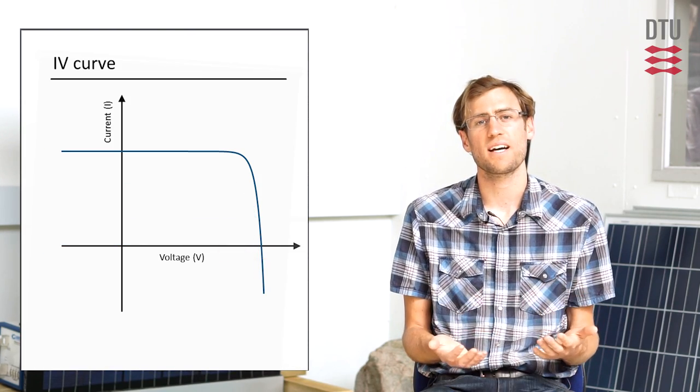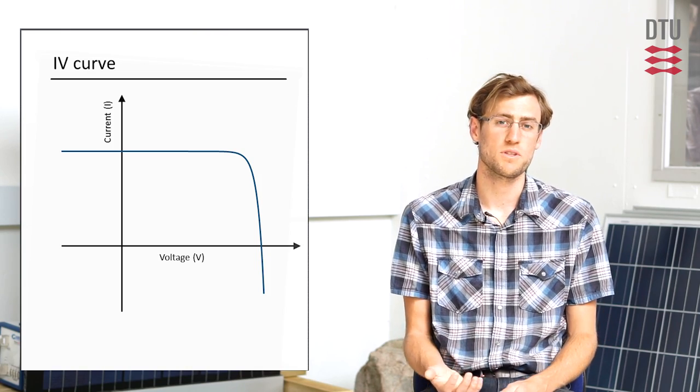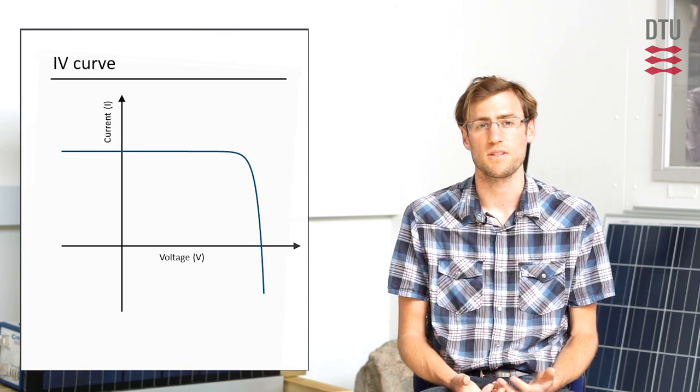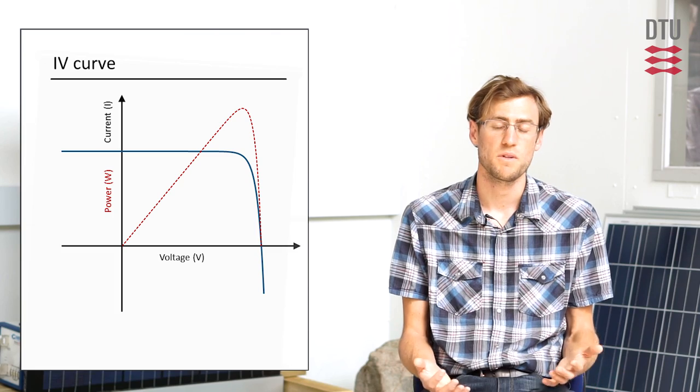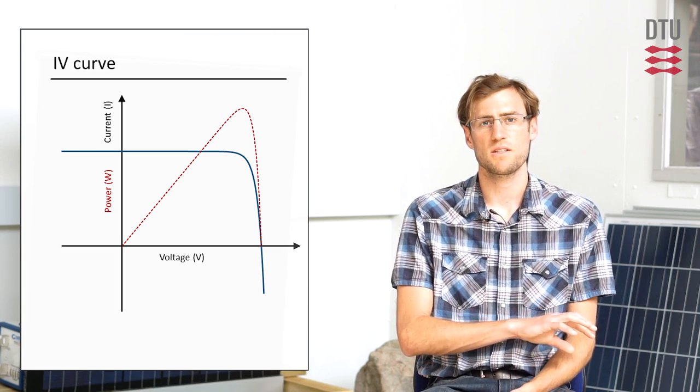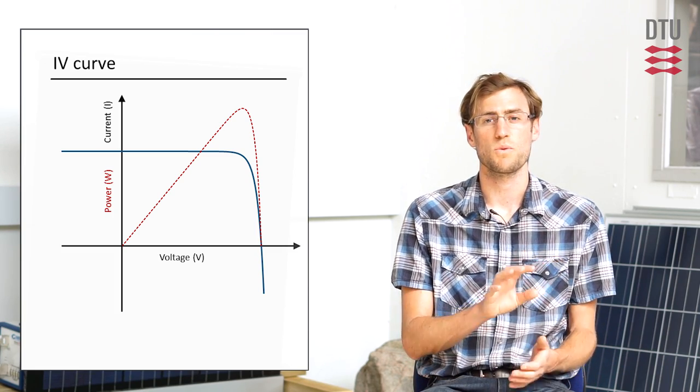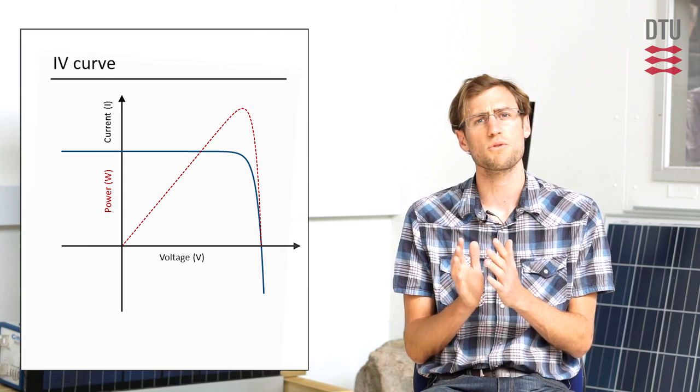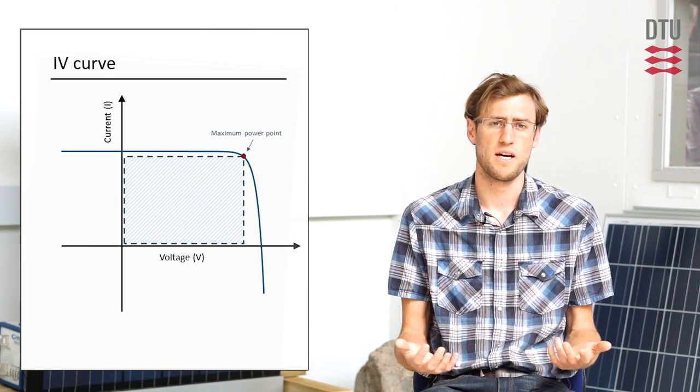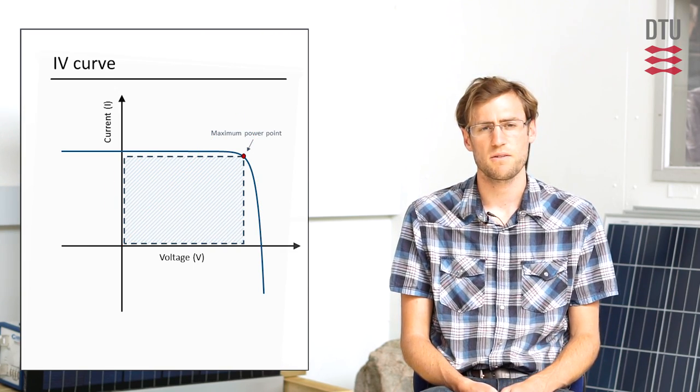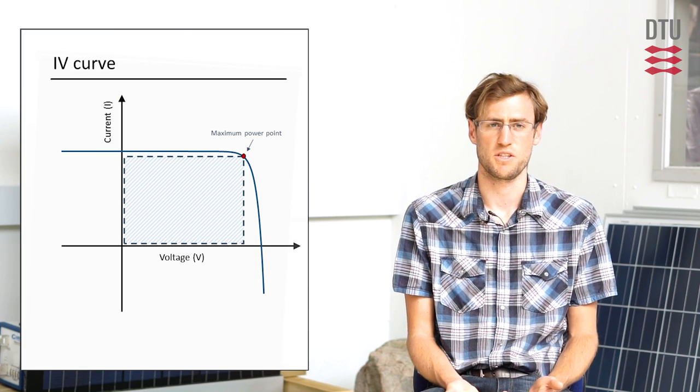If you look at the two axes of the IV curve, you have current and voltage. So the product of those two is power, electrical power. So if we look at the IV curve, the point in the IV curve where the product of those two is at its maximum is called the maximum power point. And it's typically found on the knee of the curve.